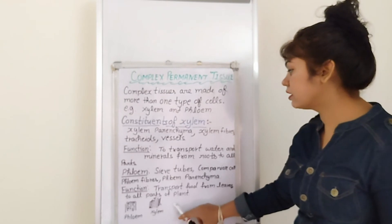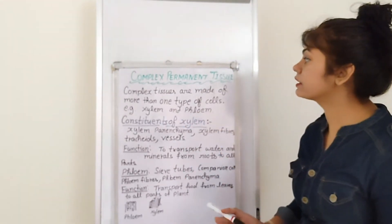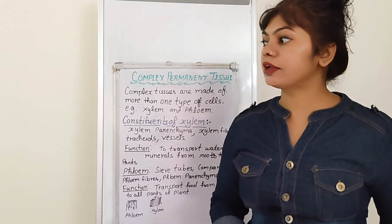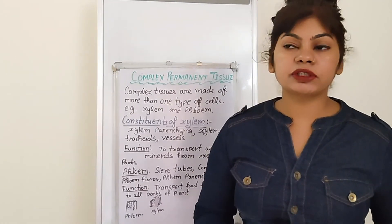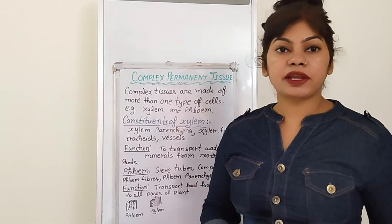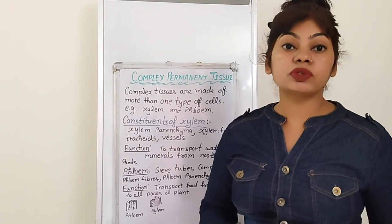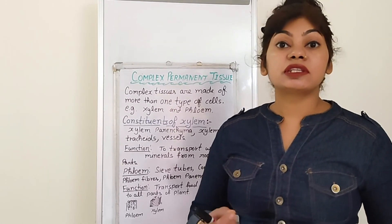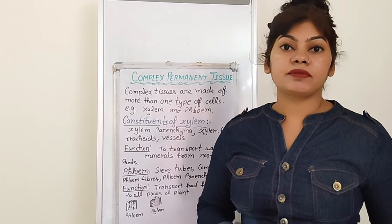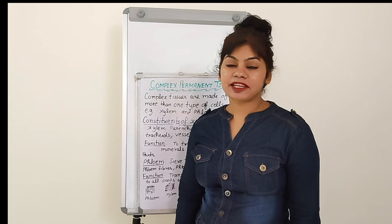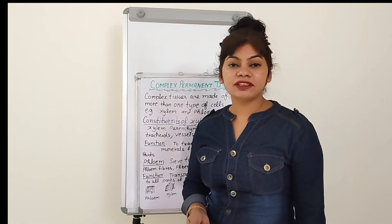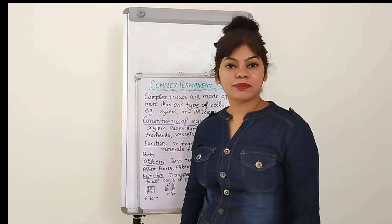The first part is now complete — we have covered full plant tissue. One more thing: when we observe plant parts under a microscope, we use a stain called safranin. Animal tissue will be covered in the second part, otherwise this video would be very lengthy. See you in the next part — bye!